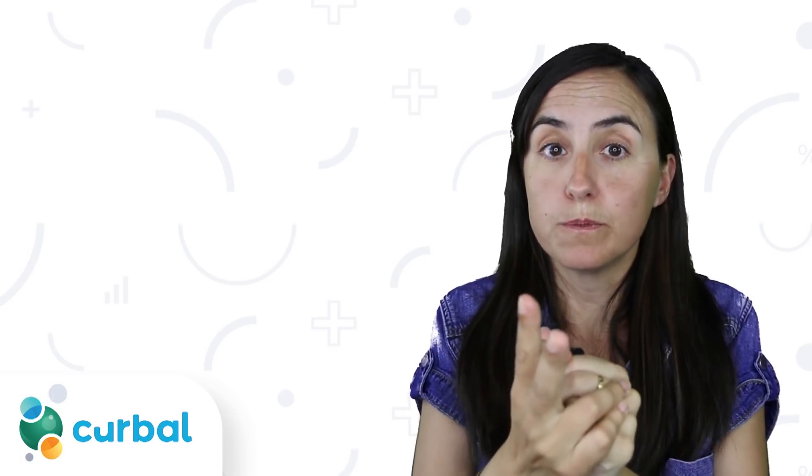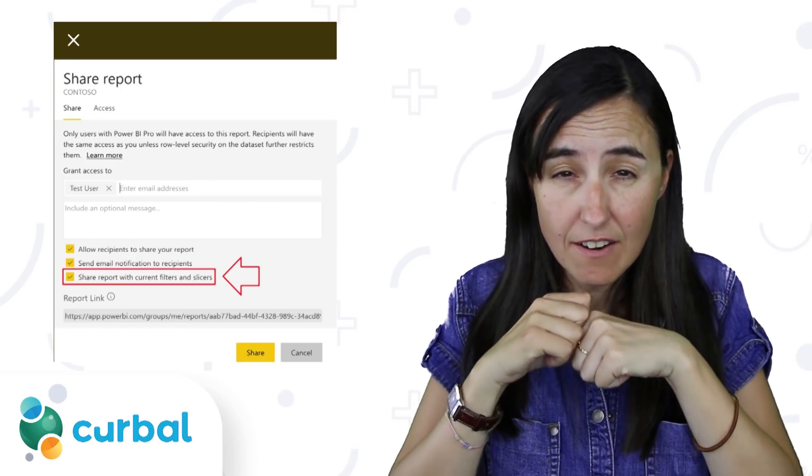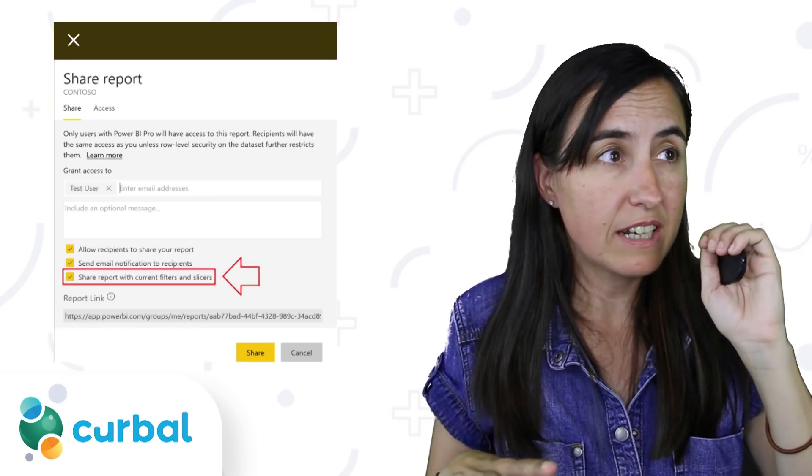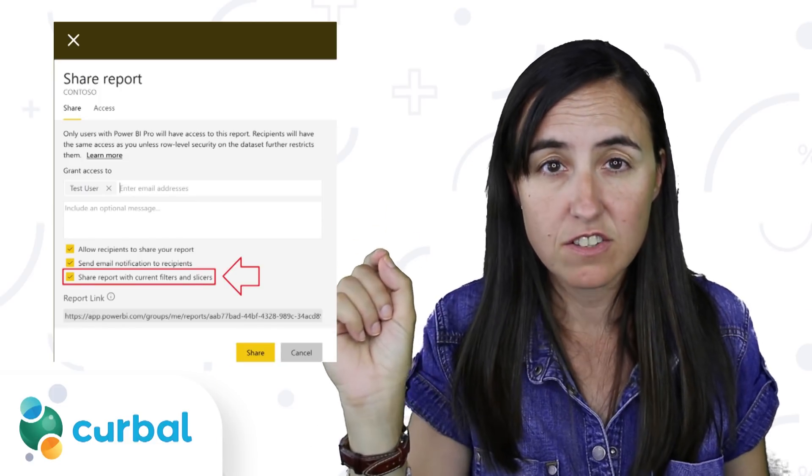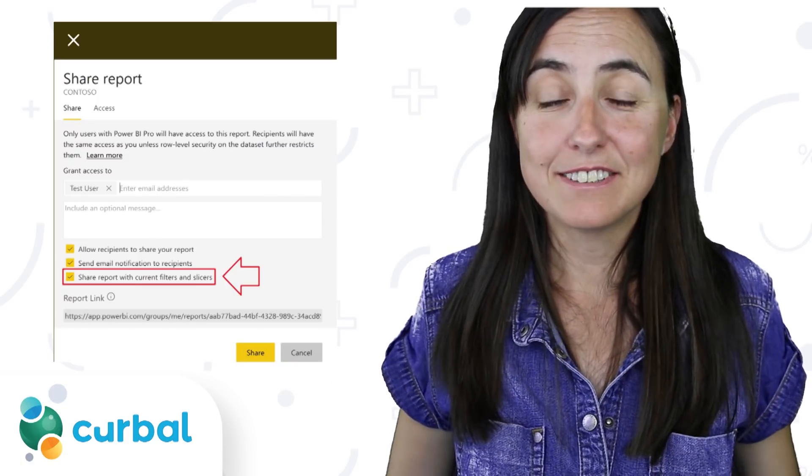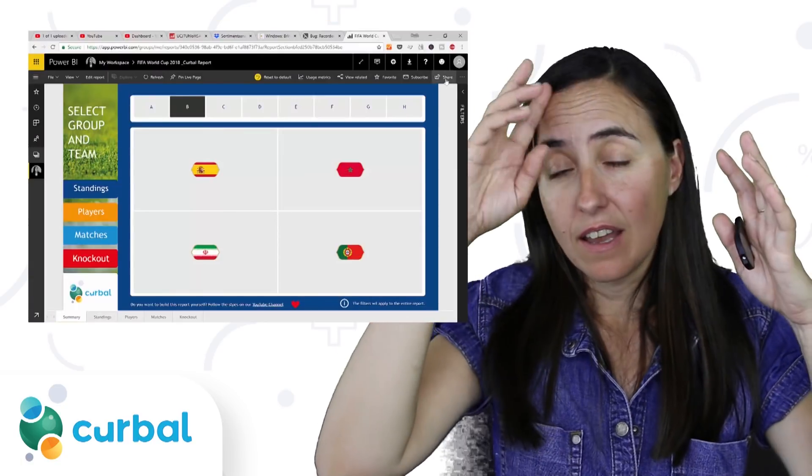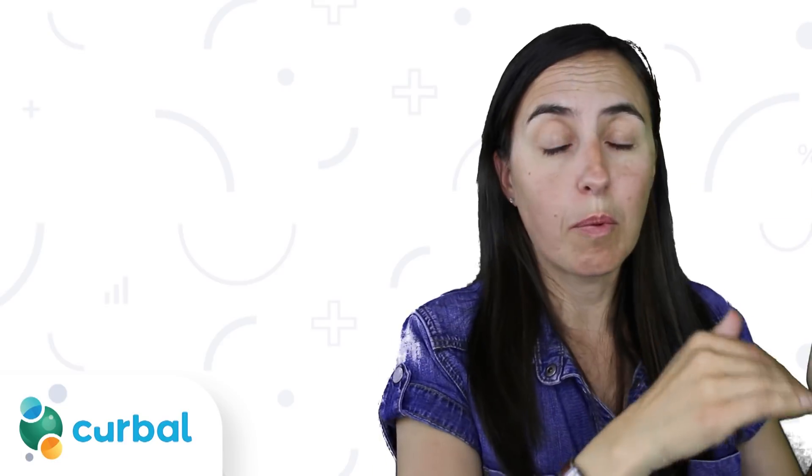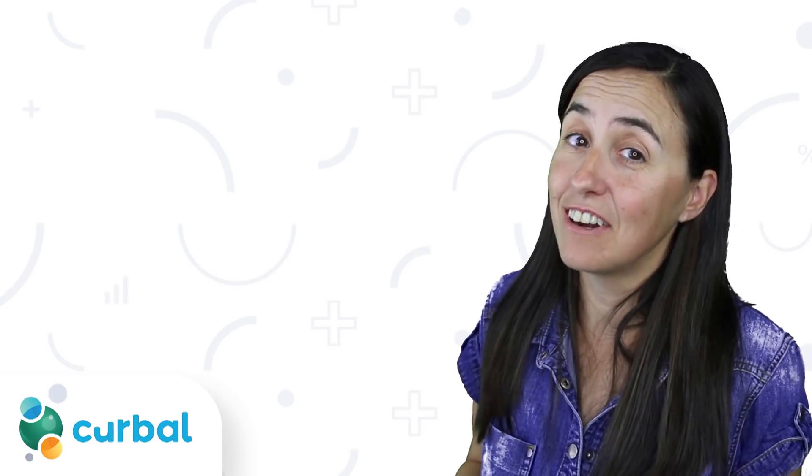Tip number 2. Do you know that you can share a report with the current filters and slicers that you have on the report? You select a few filters, you select some slicers, and you want to share it with somebody else. You can actually do that in Power BI service. What is that useful for? Imagine that you have a headquarters report and you want to send it to your company in Spain. You can set all the filters to Spain and share it like that, so that you don't have to filter it by them. I think it's very useful.